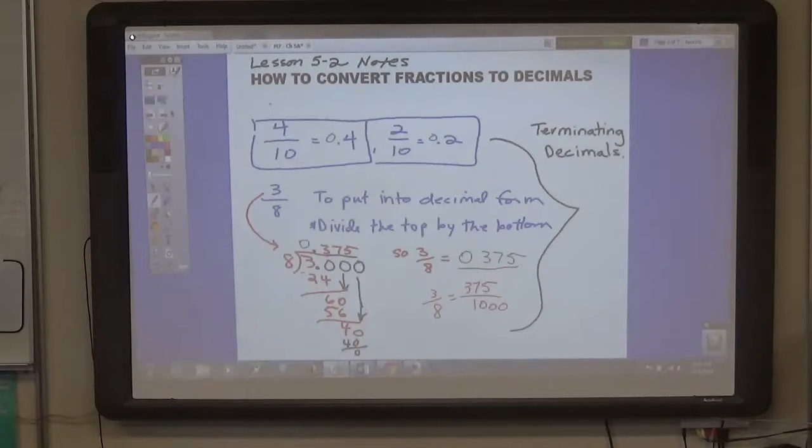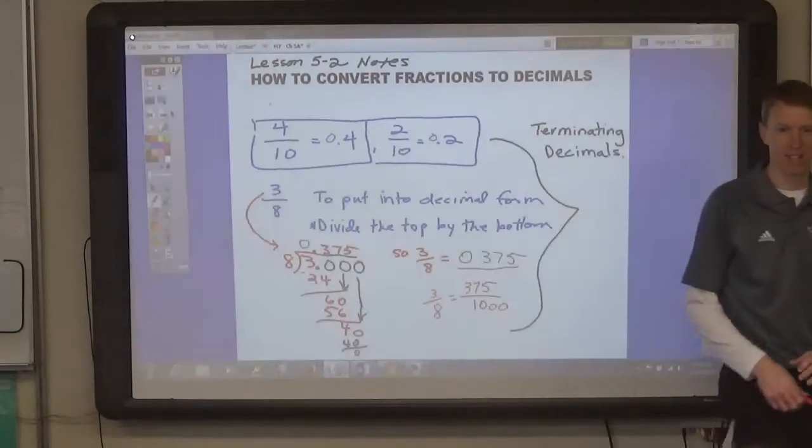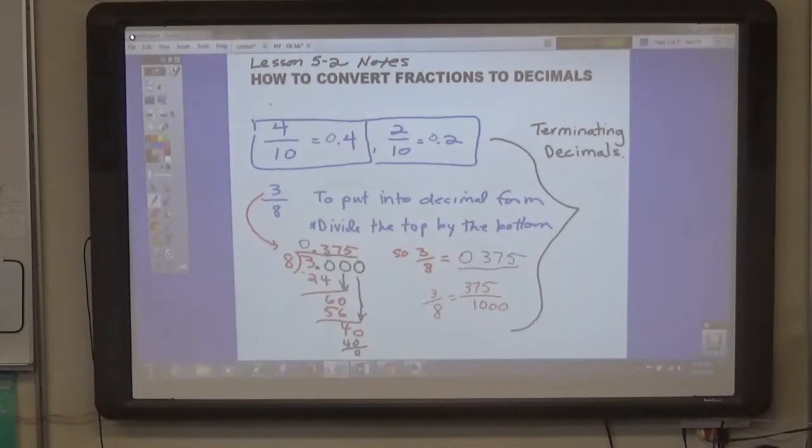Yes, two-fifths is also four-tenths in decimal form. In fact, there's an infinite number of ways to write four-tenths as a fraction if you include equivalent fractions.